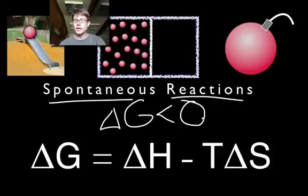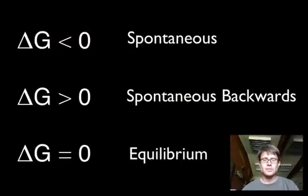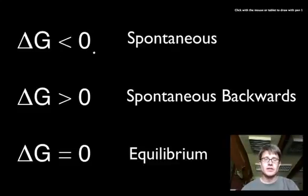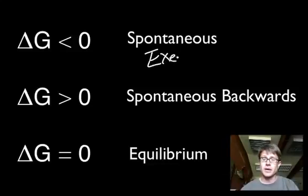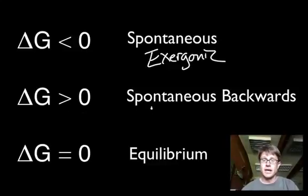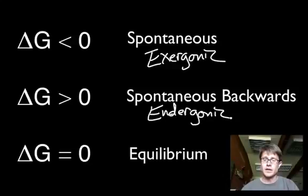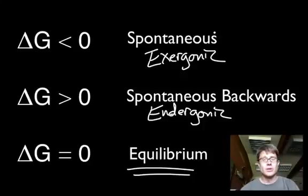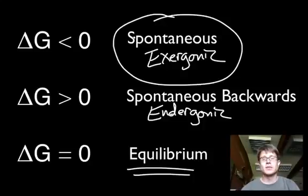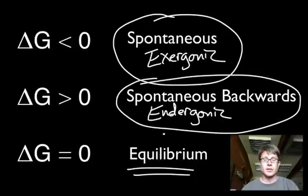If delta G is greater than zero, that's a non-spontaneous reaction. In summary: if delta G is less than zero, that's a spontaneous or exergonic reaction — an energy-releasing reaction. If it's greater than zero, that's an endergonic reaction. And if the available free energy doesn't change, the system is at equilibrium. The quintessential example of a spontaneous reaction in life is cellular respiration. Photosynthesis is an example of an endergonic reaction.